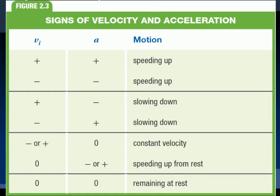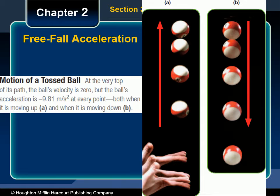When an object is thrown up in the air, it has a positive velocity and a negative acceleration. From Figure 2.3, we see that this means the object is slowing down as it rises in the air. From the example of the ball and from everyday experience, we know that this makes sense. The object continues to move upward, but with a smaller and smaller speed. In the photograph of the ball, this decrease in speed is shown by the smaller and smaller displacements as the ball moves up to the top of its path.